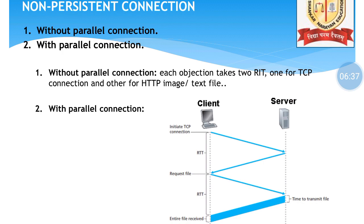The request file goes from server back to client. There is a block on the server side in the diagram — that represents the time to transmit the file from server to client, indicating a bit of delay. Finally, with 2 RTTs total, the entire file is received. So in parallel connection, the first RTT is for requesting the file, and the second RTT is for receiving it.